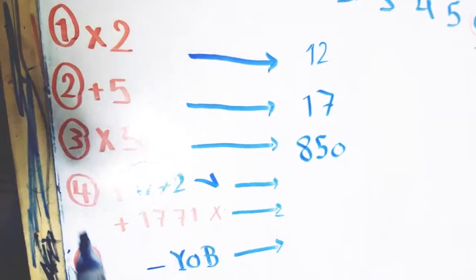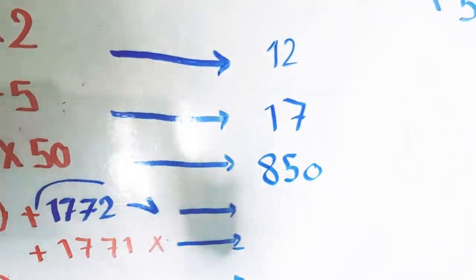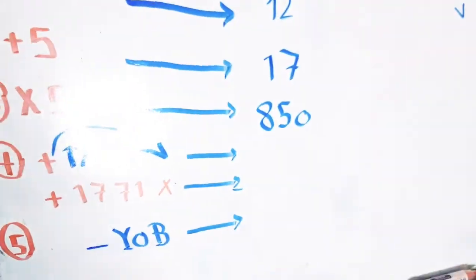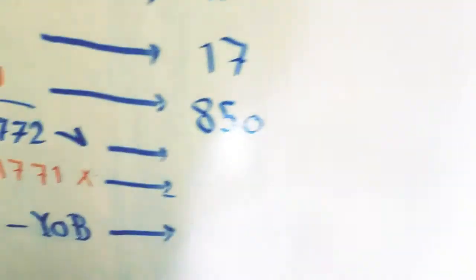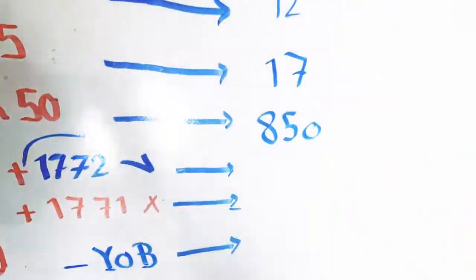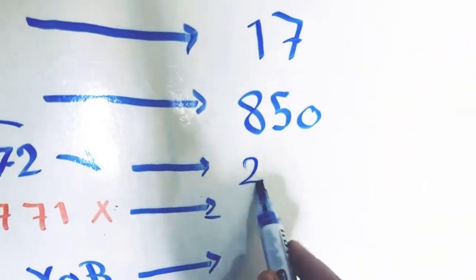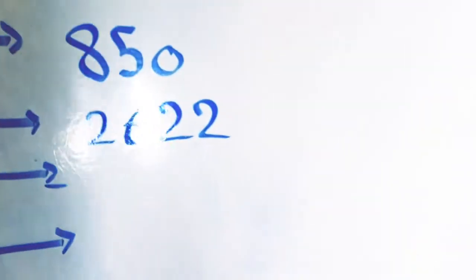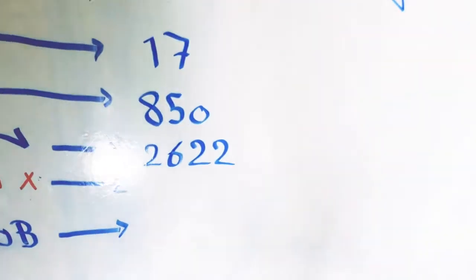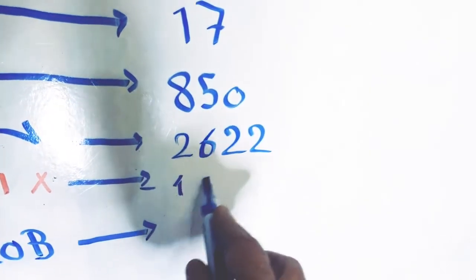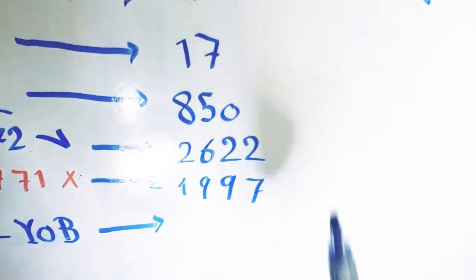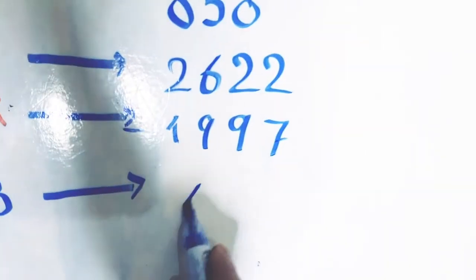If you have already celebrated your birthday, we add 1772 to this result. If you haven't yet celebrated your birthday, we add 1771. Suppose that you have already celebrated your birthday, so we add 1772. When we add 1772 to 850, we get 2622. From this result, we subtract the year of your birth. Suppose the year of your birth is 1997. When we subtract 1997 from 2622, we get 625.